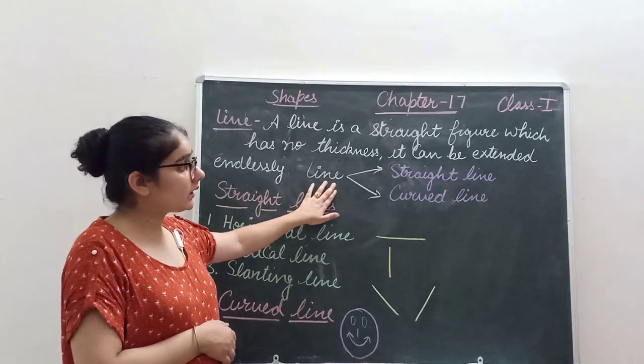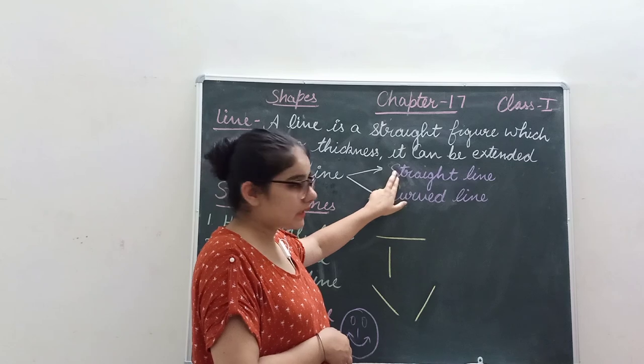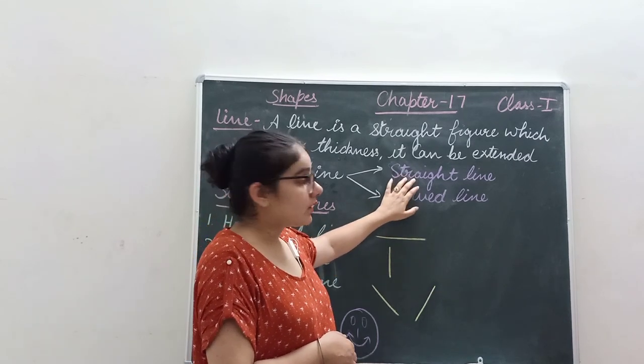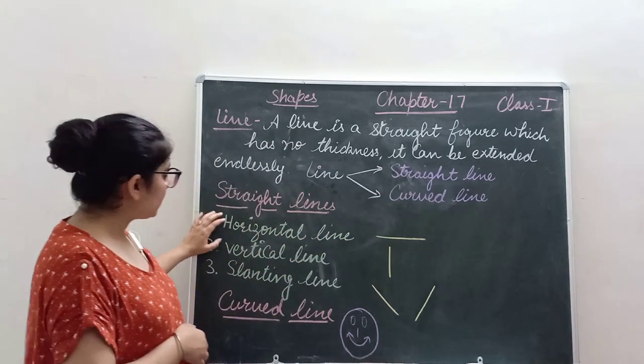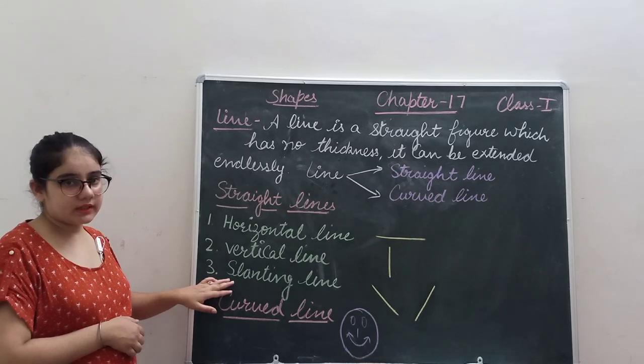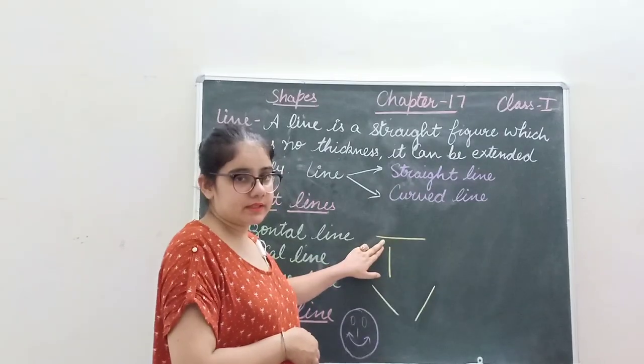Now there are two types of lines. First one is straight line and another one is curved line. Straight line can be of three types: horizontal lines, vertical lines, and slanting lines. Horizontal lines can be drawn like this.